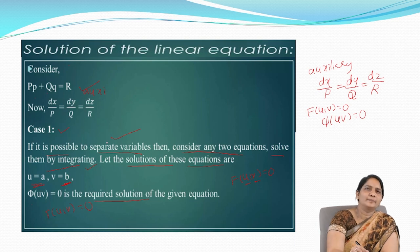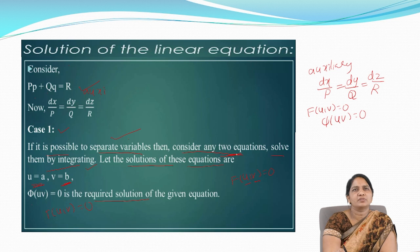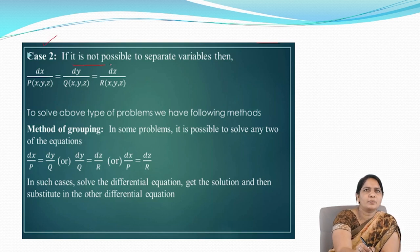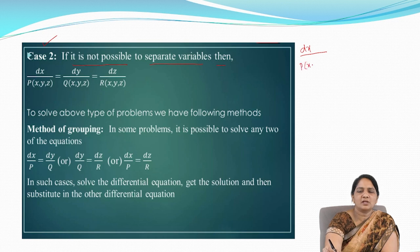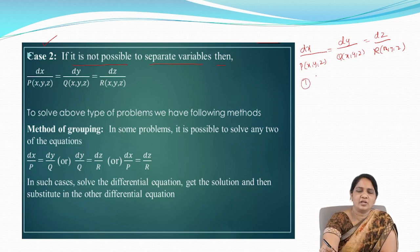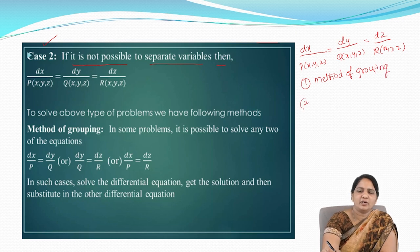In Case 1, if there is a possibility to separate the variables, we consider any two equations and solve them by integrating to get the solution. In Case 2, if it is not possible to separate the variables, we have two methods: one is the method of grouping, and the other is the method of multipliers.